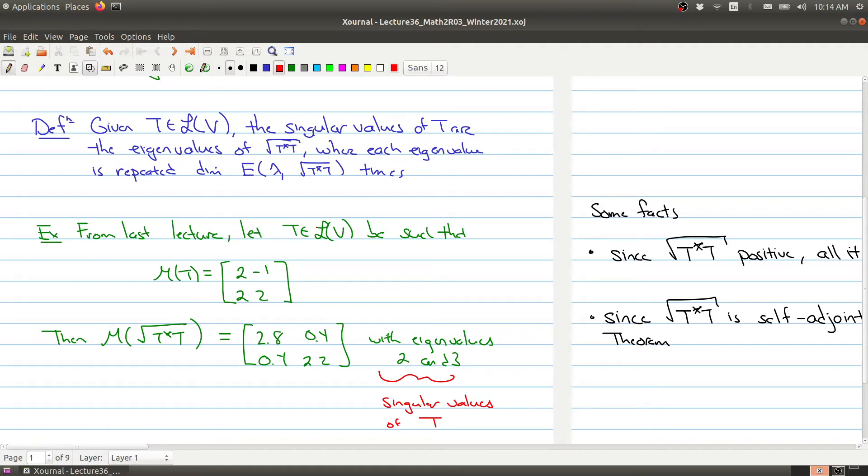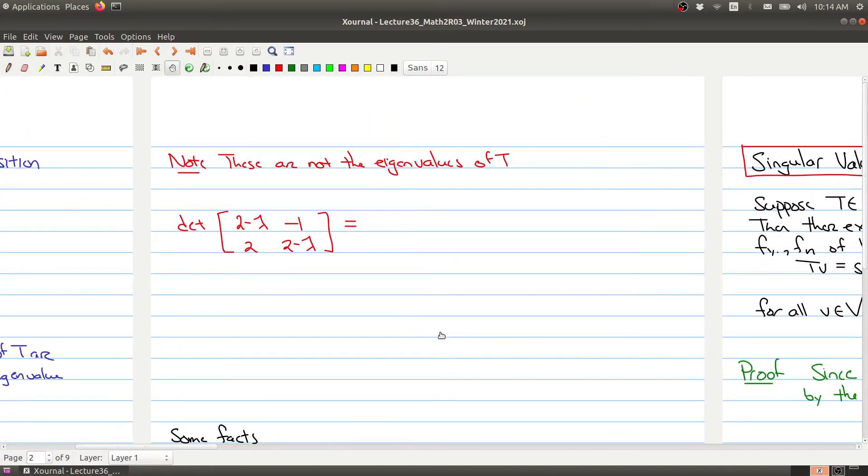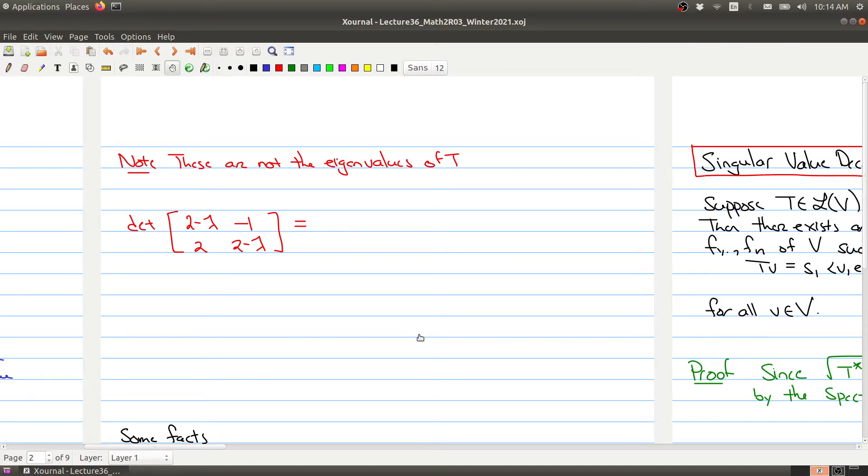These guys here are the singular values of the original operator that we started with. So it's not the eigenvalues of T. I want to make that clear. Note that these are not the eigenvalues of T. If we were to use some of the results from Math 1B03, how do we find the eigenvalues?